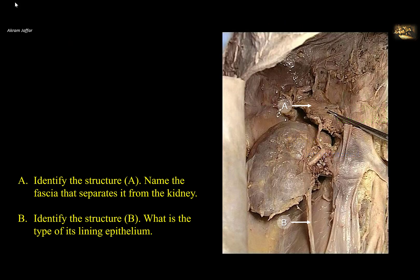Identify structure A. Name the fascia that separates it from the kidney. Identify structure B and state the type of its lining epithelium.